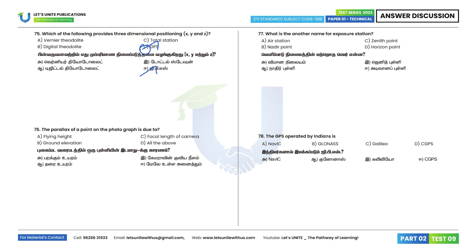Question 76: The parallax of a point on a photograph is due to flying height, ground elevation, or focal length of the camera — all of the above is the correct answer. Question 77: What is another name for exposure station? The answer is air station. Option A.